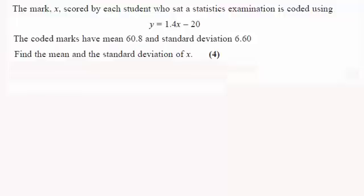Okay, welcome back then. If you had a go, we've got this transformation that Y equals 1.4X minus 20, and we're told the mean of the Y data is 60.8 and the standard deviation of the Y data is 6.60. So we've got to find the mean and standard deviation of X.